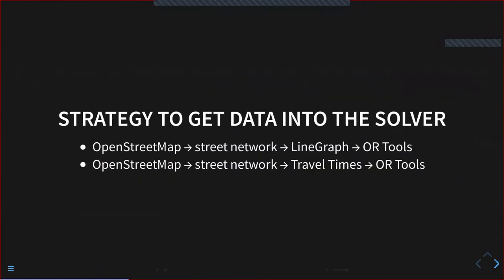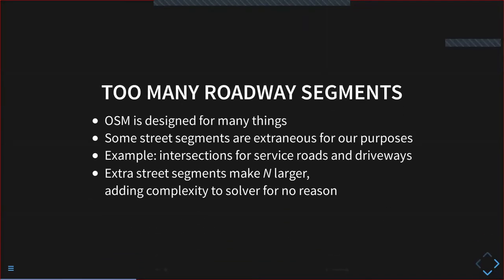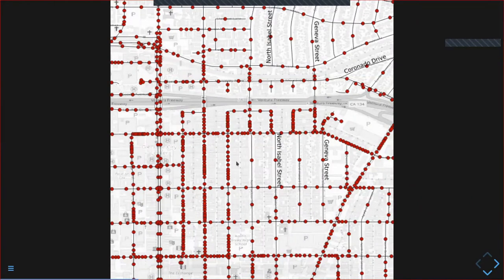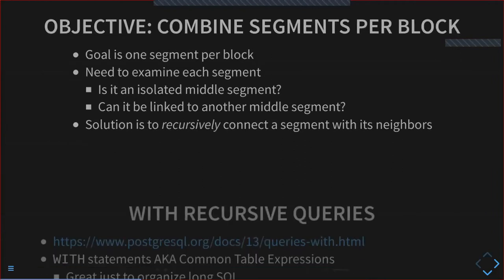We've gotten the data into the database, but before making a street network we first need to clean up the OpenStreetMap data — this is actually the hardest and longest part. The problem is there are too many roadway segments. Looking at a map, some blocks have one segment as desired, but surrounding streets have many segments per block. The midpoints of each segment are plotted as dots. I need to examine each segment and determine if it should be joined with neighbors to form one longer segment, and for this I'll need to use recursive queries.